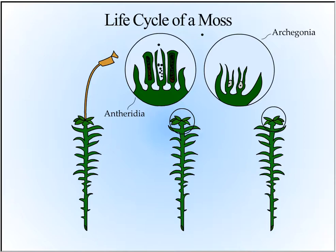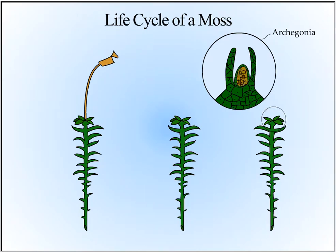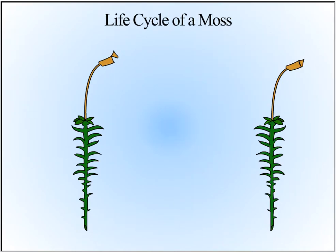Sperm will swim through moisture and fertilize the egg. A diploid fertilized egg called a zygote develops by mitosis into a sporophyte. Sporophytes produce spores, which will be carried by the wind and again land on a moist surface.